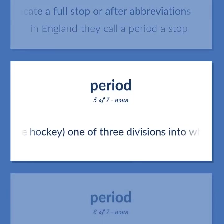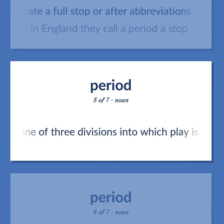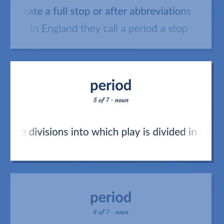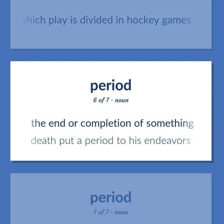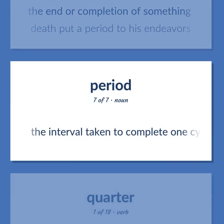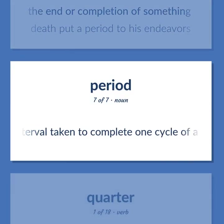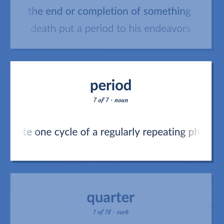Ice hockey: One of three divisions into which play is divided in hockey games. The end or completion of something — death put a period to his endeavors. The interval taken to complete one cycle of a regularly repeating phenomenon.